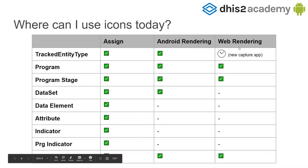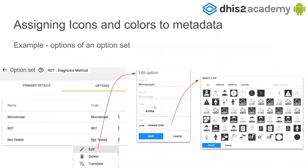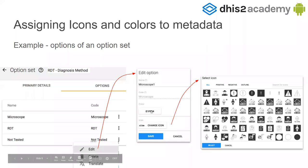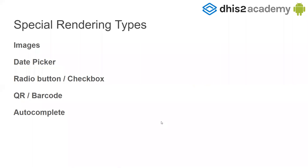Android renders the icons we are showing here — it's a work in progress, and the same for web. Some will be displayed in the new capture app when it's completed. This is how it looks where you add icons and colors: you edit your metadata and choose color, icon, and then the outline, positive, or negative type. I will demo this.